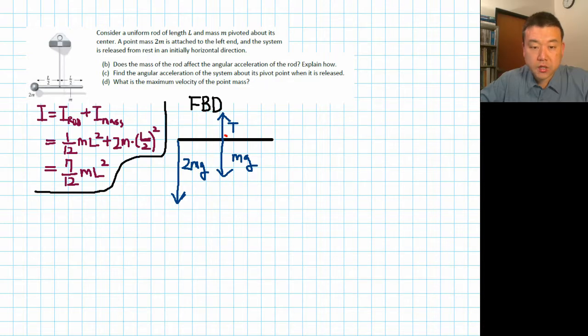This is the free body diagram. Our center of rotation, as the problem gave us, is this pivot point. So the only force that's providing any torque, generating any torque, is the weight of the 2M. It's generating counterclockwise torque. Let's write down the net torque equation. I think I can actually do this without ever writing the net force equation, which is good because I don't really want to figure out tension if I don't have to.